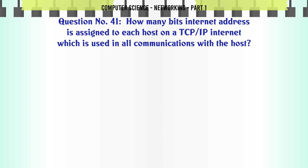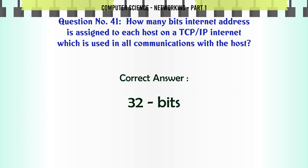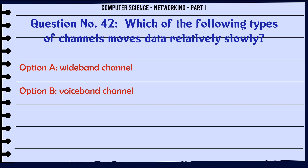How many bits internet address is assigned to each host on a TCP/IP internet, which is used in all communications with the host? A. 16 bits. B. 32 bits. C. 48 bits. D. 64 bits. The correct answer is: 32 bits.